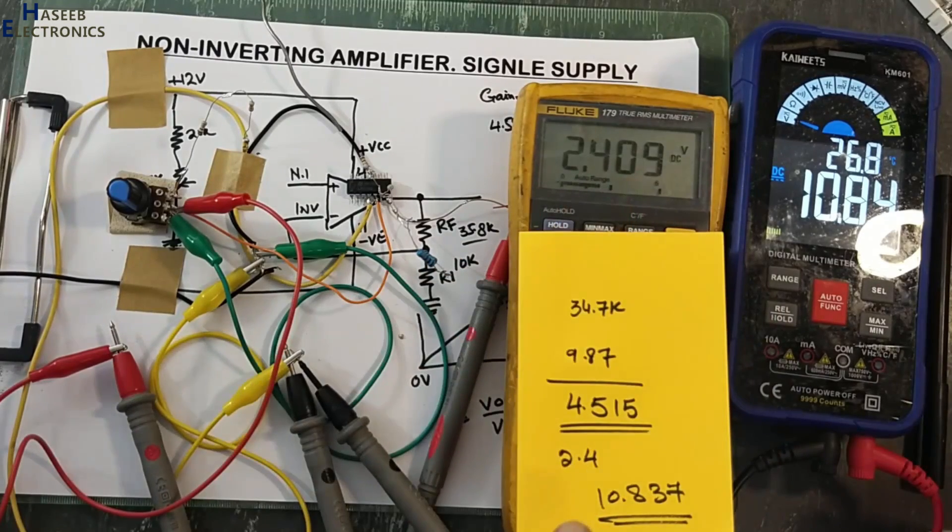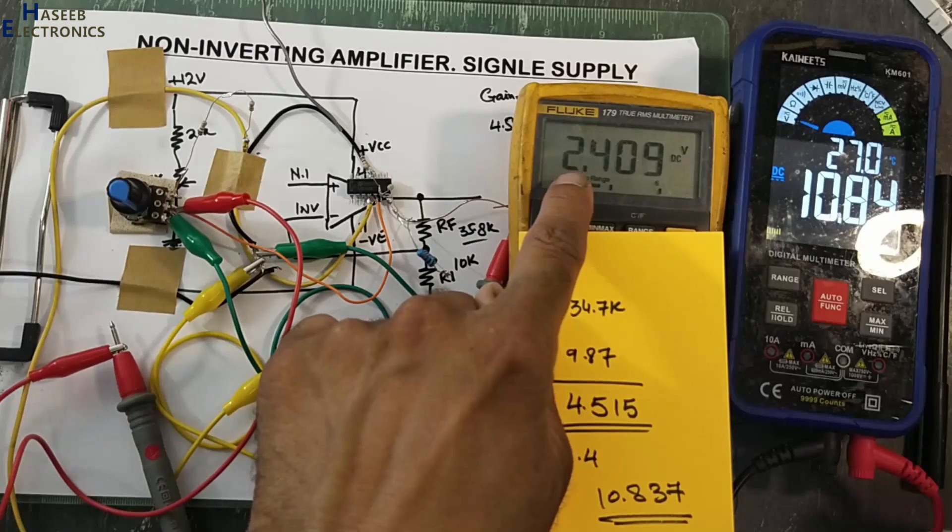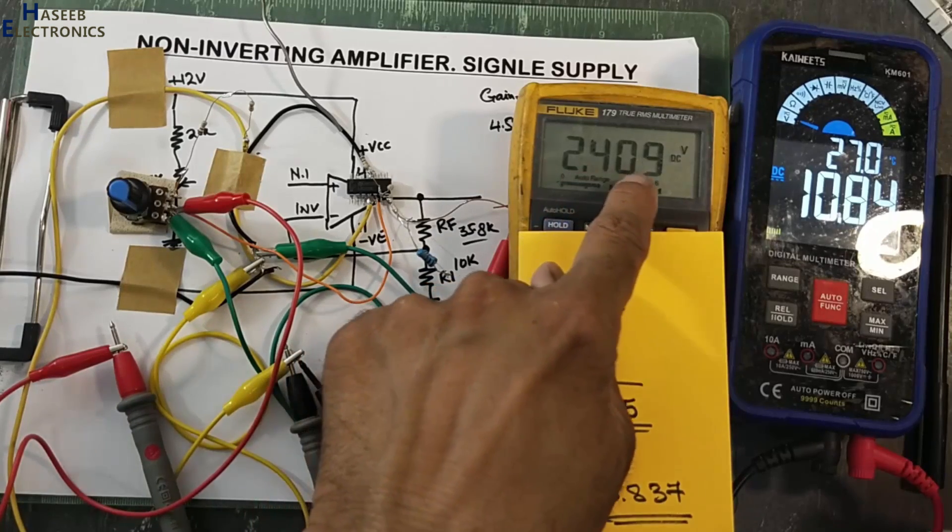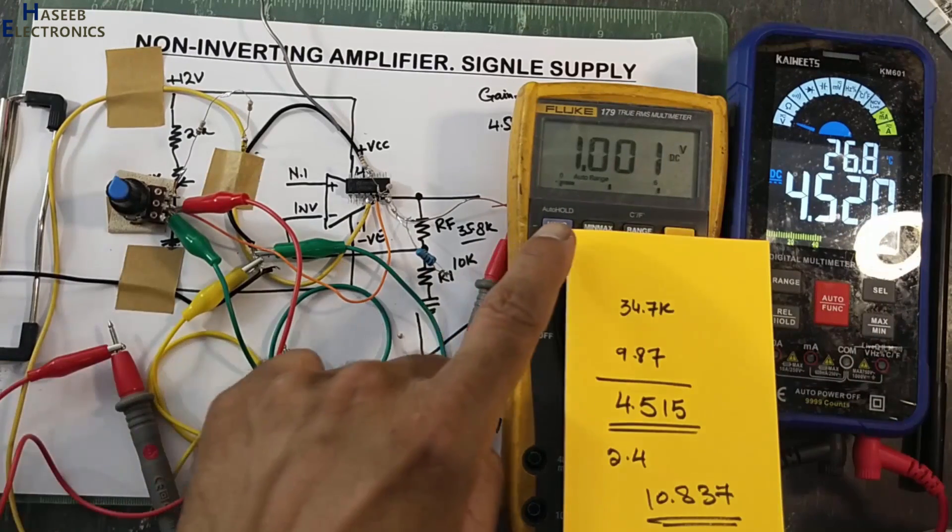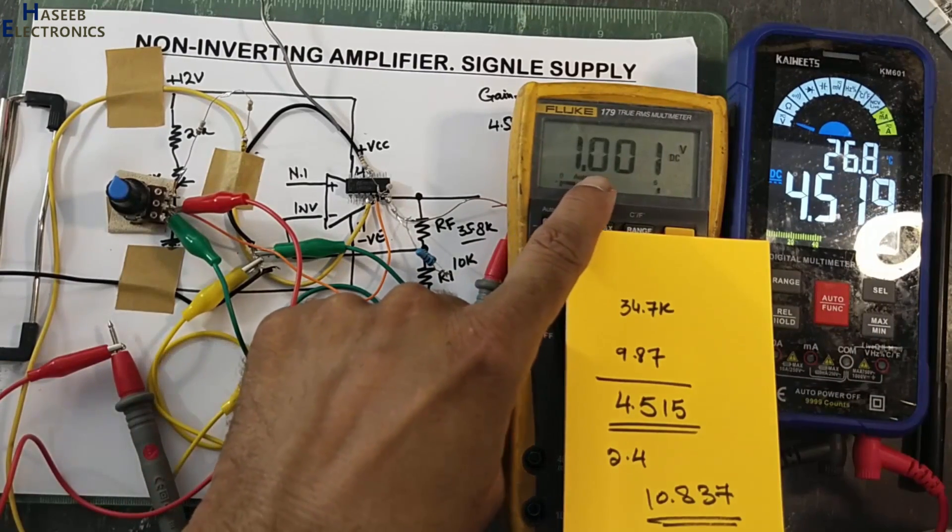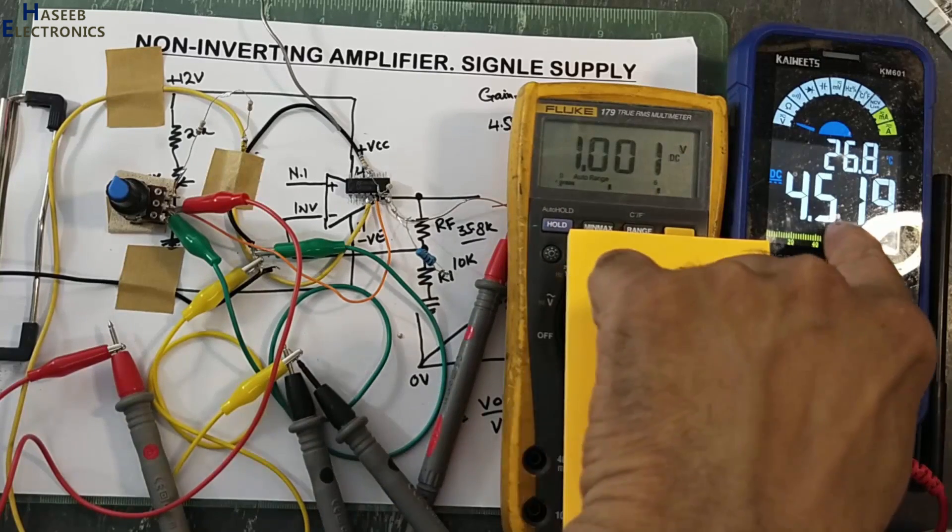At 2.4 volt input, our calculated value was 10.837. The physical value: 2.409, 10.84. I applied 1.00 volt, the same gain which we calculated, the same gain is here, 4.51.